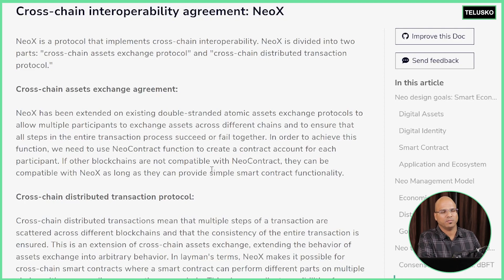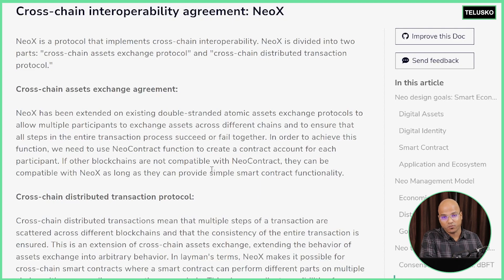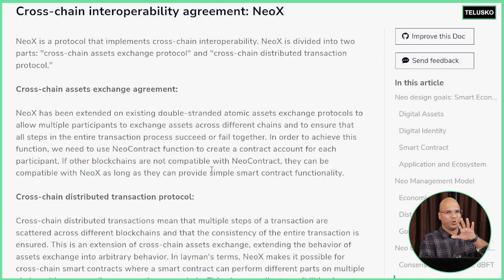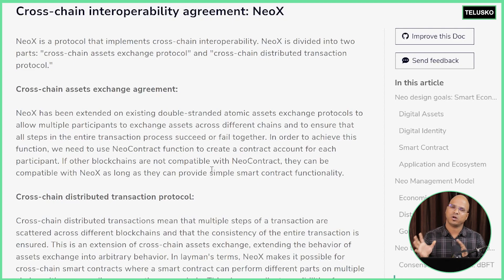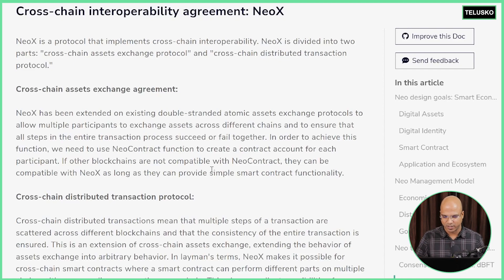One of the issues with most blockchains is cross-chain support. Every blockchain has a different way of working, and if you want to transfer an asset from one blockchain to another, it will be tricky. NEO says don't worry — we have something called NEO X, which helps with the cross-chain asset exchange agreement. It also uses something called a cross-chain distributed transaction protocol to achieve that, so you can basically exchange an asset between two different chains.